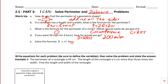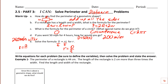If we solve d = rt for r, we divide by t and get r equals distance divided by time. For example, if we went 280 miles in 7 hours, the rate would be 280 divided by 7, which is 40 miles per hour. These formulas can come in handy depending on what information is given.